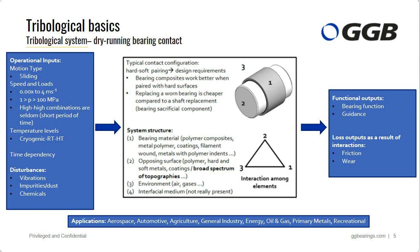In this picture you can see a typical tribological system. In the most general case, it's made of four components, though only three are shown here. There's a bearing — that is number one in the picture. The bearing is running on a shaft — that's number two. And then there's the environment — that's number three. The fourth element, not shown in the picture, is the lubrication — the medium between the two surfaces in contact.